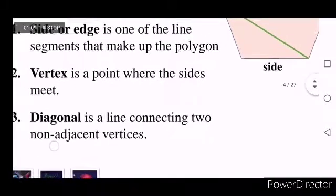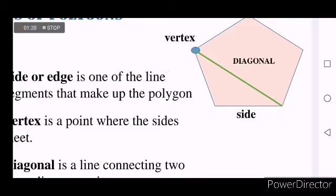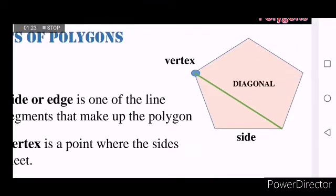The next is called a diagonal. This is a line connecting two non-adjacent vertices. So the green line here on the figure is called a diagonal because it is a line formed between two non-adjacent vertices. In the figure, we can actually draw five diagonals.